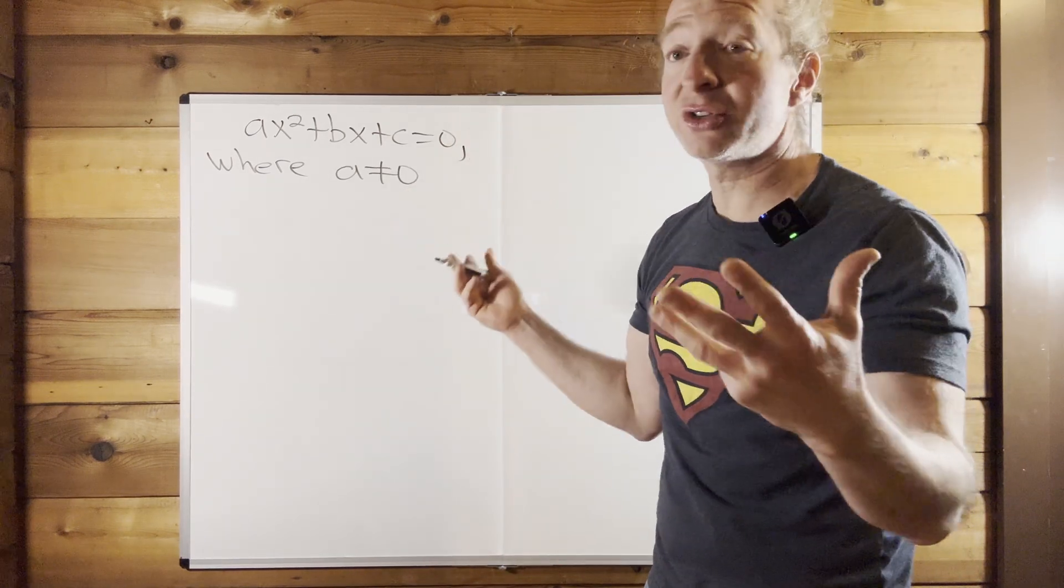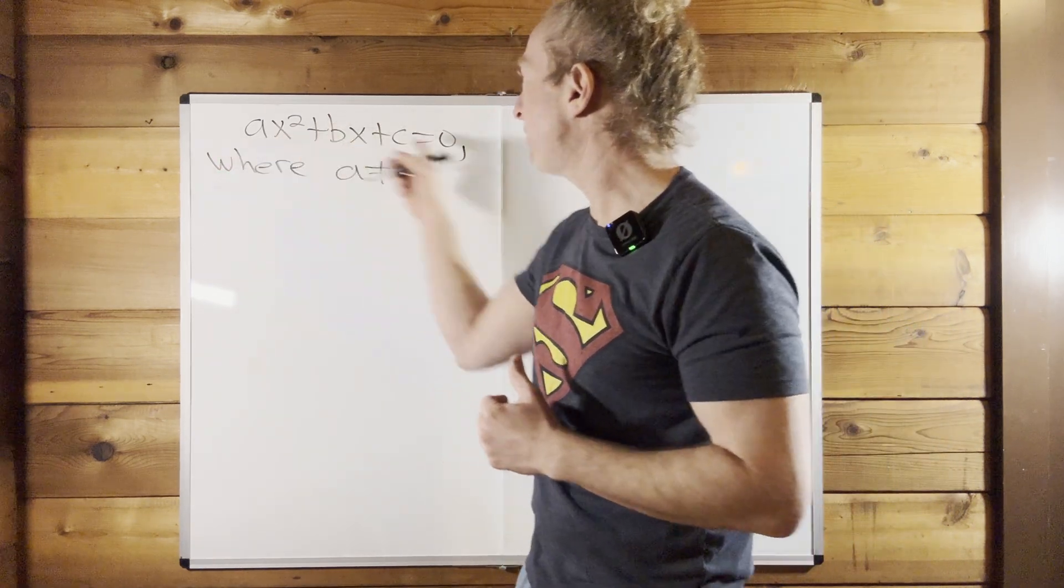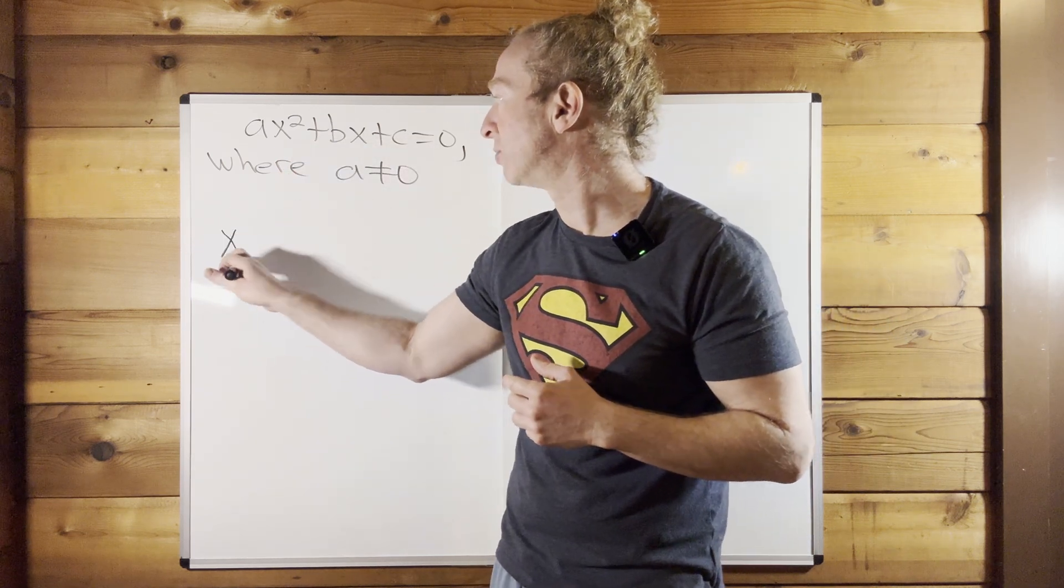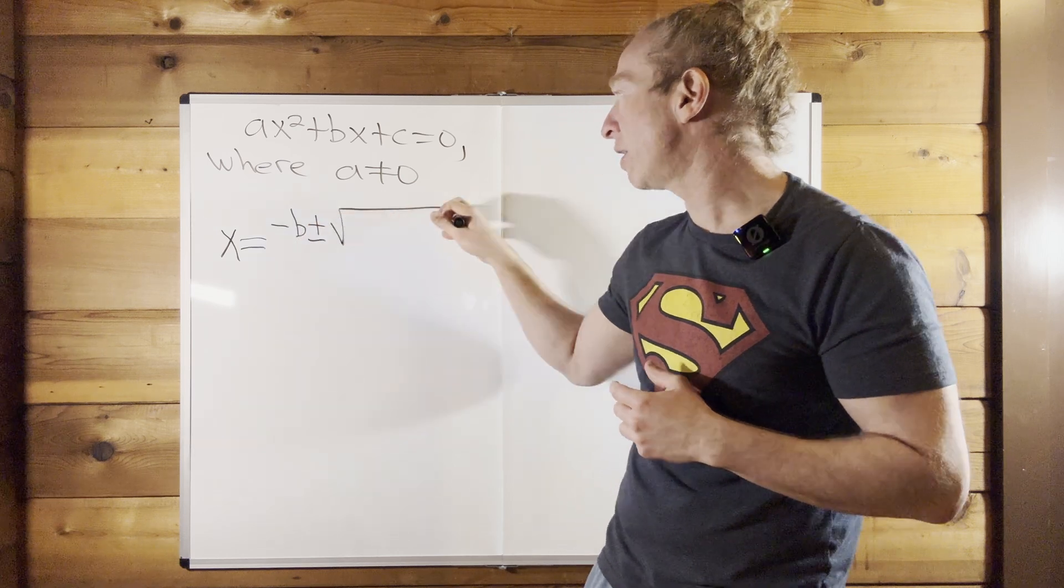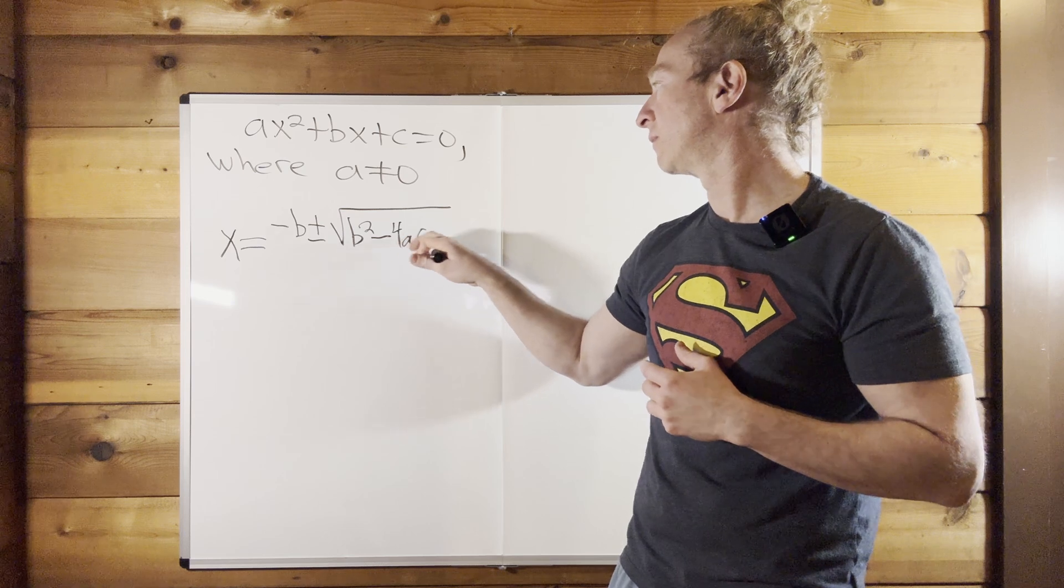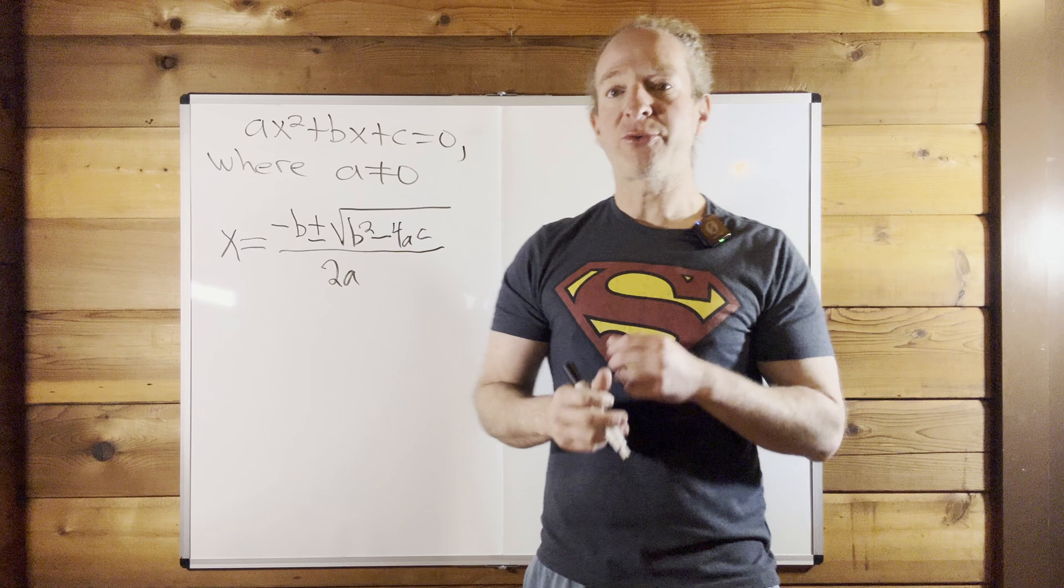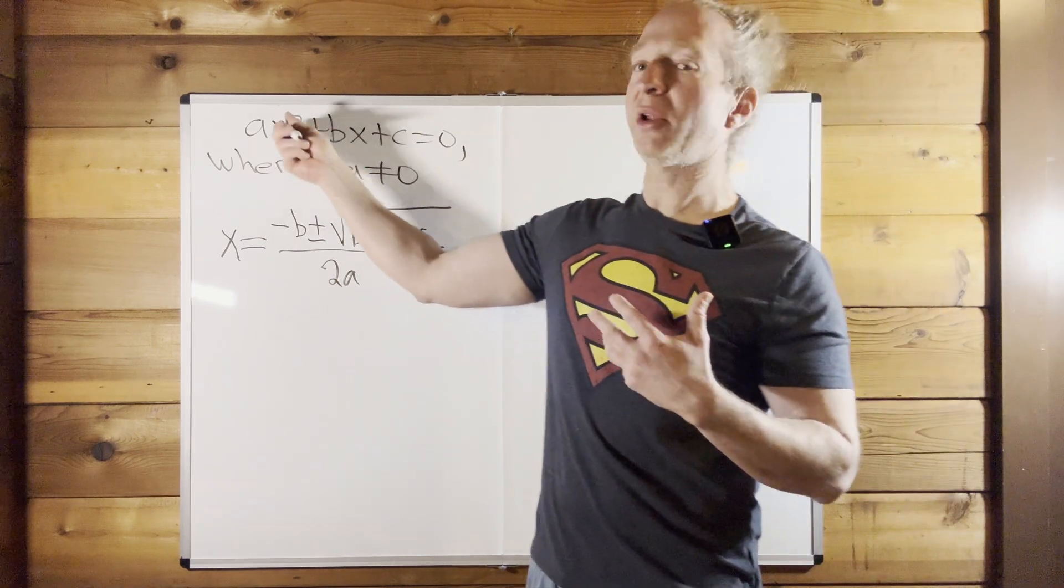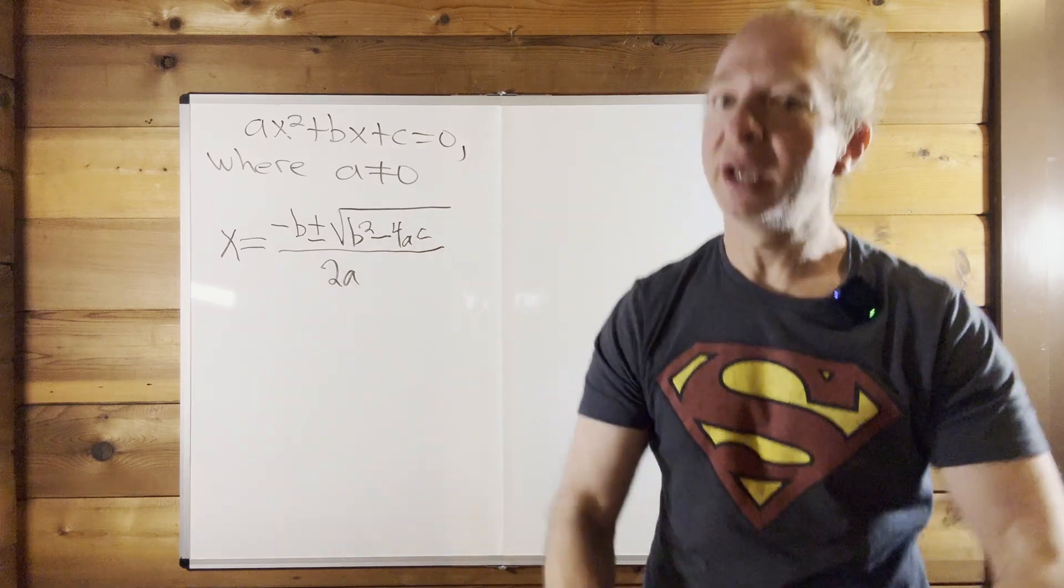All right, so quadratic equations, how do you solve them? Well, there's a formula you can use to solve the quadratic equation. The formula says if you have this equation, the solutions are given by the following formula: x equals negative b plus or minus the square root of b squared minus 4ac all over 2a. So that's the formula for the quadratic equation. So all we have to do is given a problem, we plug in the values of a, b, and c into this formula, and we simplify carefully, and then we get the answer.